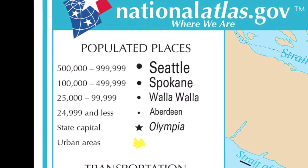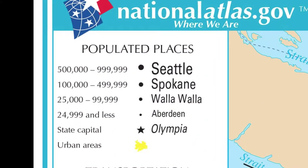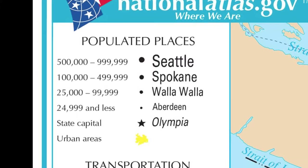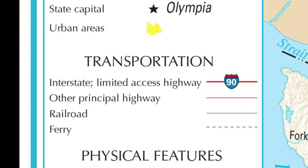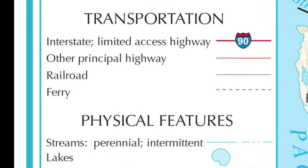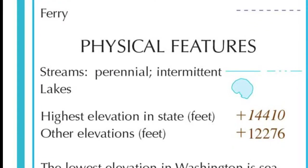This part of the key shows the sizes of the population of cities with bigger or smaller letters. This part of the key shows symbols for highways and other forms of transportation. This part of the key shows symbols for streams,